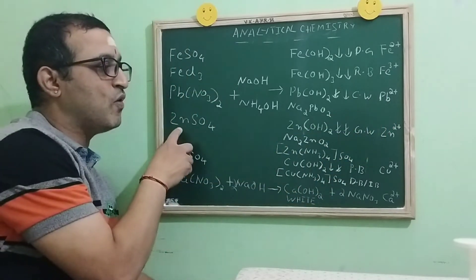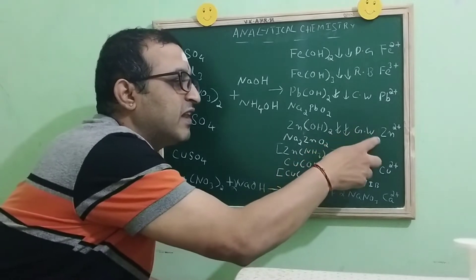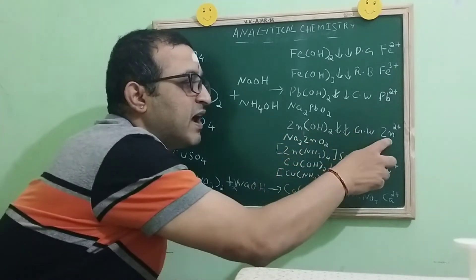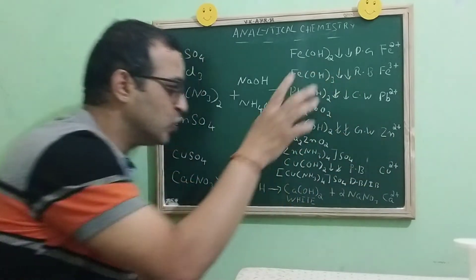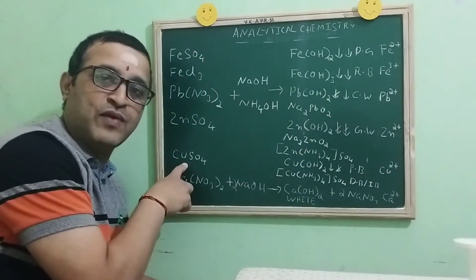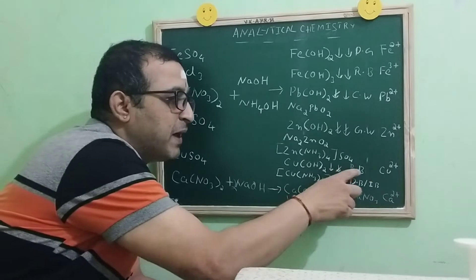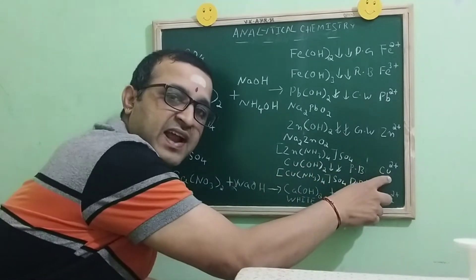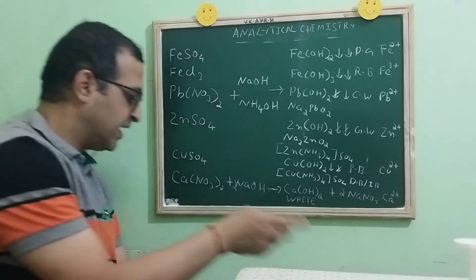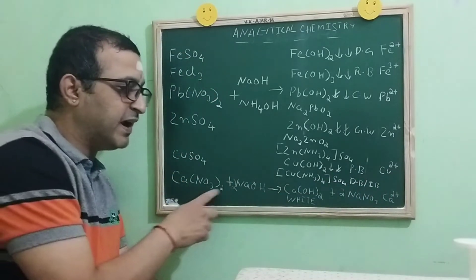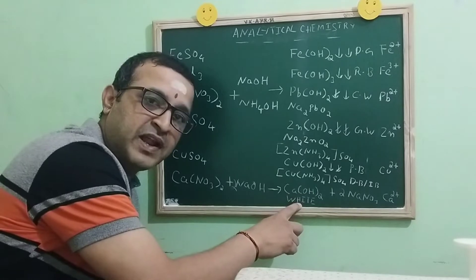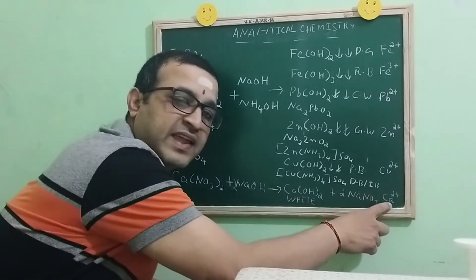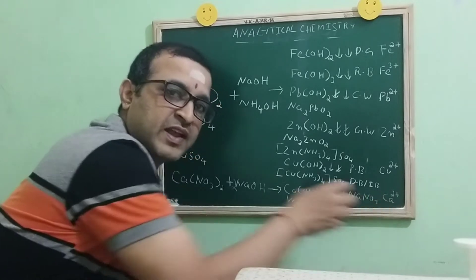In case of ZnSO4, it produces a gelatinous white precipitate of Fe(OH)2 and the cation is Fe2+. In case of copper sulfate, it produces a pale blue precipitate of Fe(OH)2 and the cation is Fe2+. In case of calcium nitrate, it produces a white precipitate of Ca(OH)2 and the cation is Ca2+.